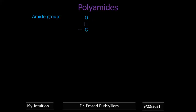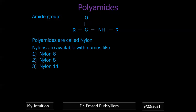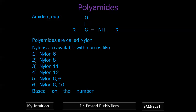Polyamides is the next polymer group. The amide group is represented as –C(=O)–NH–, with an alkyl or aryl group on either side. Most polyamides with alkyl R groups are called nylons. They are available as nylon 6, nylon 8, nylon 11, nylon 12, nylon 6-6, and nylon 6-10. Based on the number of carbon atoms in the monomer or monomers, the nylon is named. Nylon 6, 8, 11, and 12 use only one monomer, while nylon 6-6 and 6-10 use two monomers.